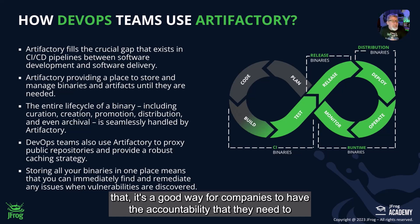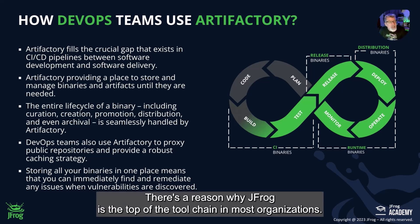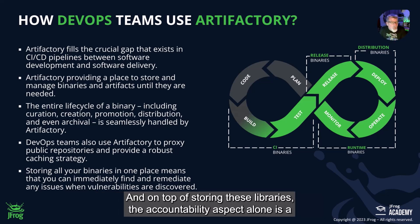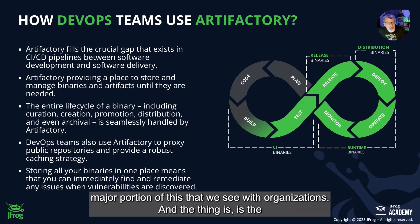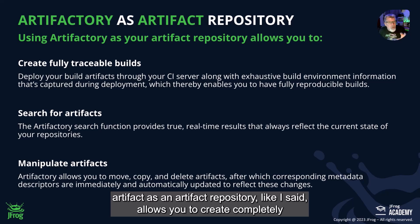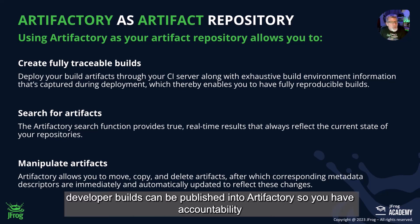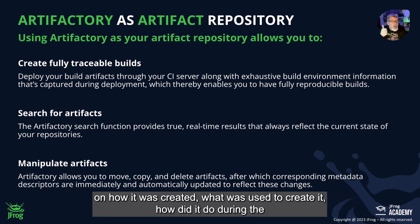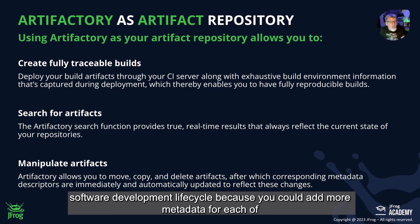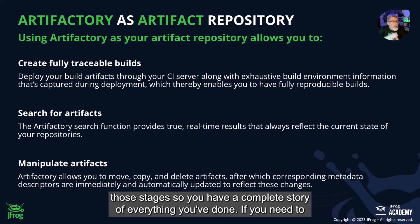This is a good way for companies to have the accountability they need to produce solid, competitive software. As an artifact repository, Artifactory allows you to create completely and fully traceable builds. Everything you produce in the CI system or developer builds can be published into Artifactory, so you have accountability on how it was created, what was used to create it, and how it performed during the software development life cycle — because you can add metadata for each of those stages, giving you a complete story of everything you've done.